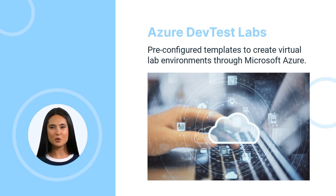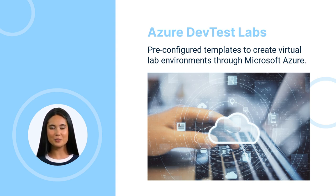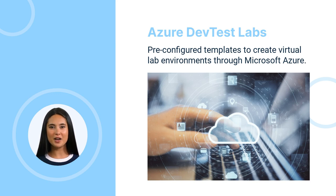Organizations, whether municipal or corporate, need virtual labs to test software and provide online training for staff and business partners. Many companies forego the need for on-site server hardware by picking up various platform-as-a-service (PaaS) products to offload the maintenance and updates to another company. But what happens when you're dealing with multiple virtual machines, PaaS resources, and other complicated networks? Do you have issues running it all efficiently? Does setting up new environments take too long under your current workflow?